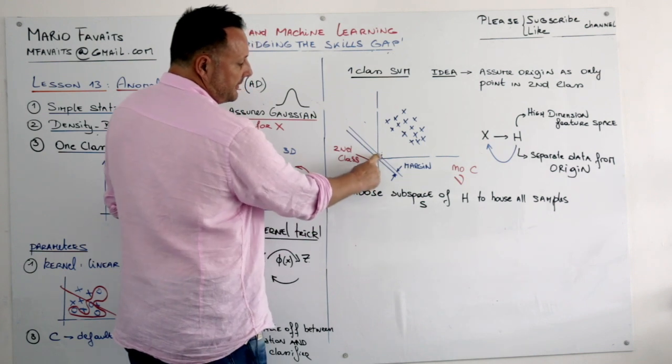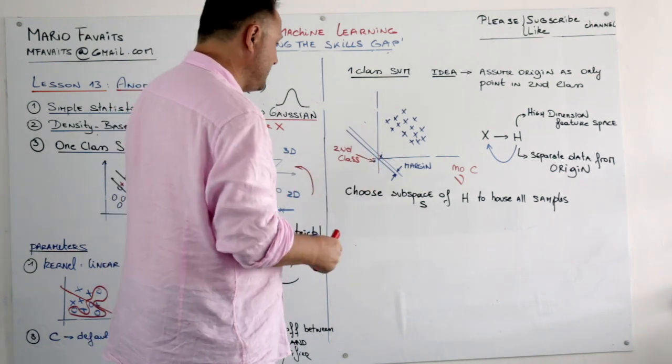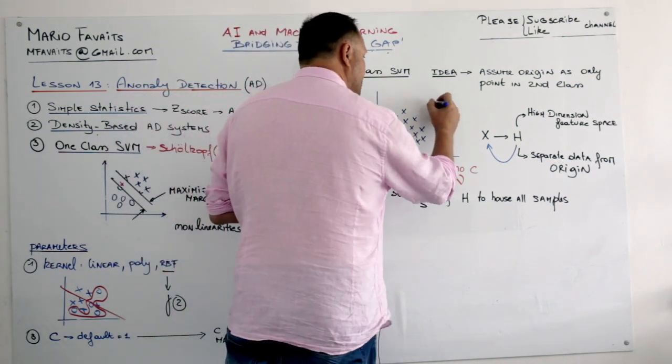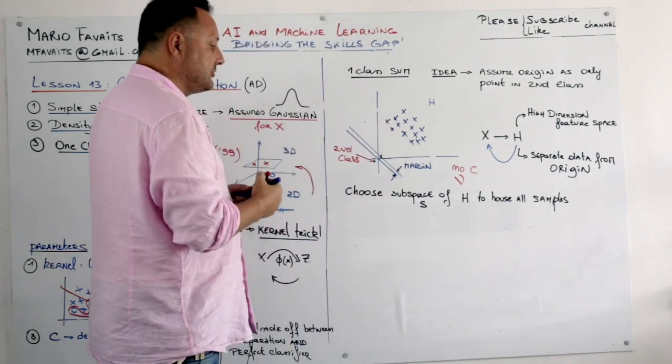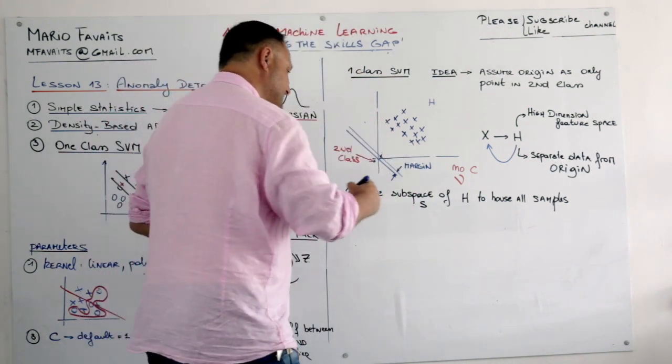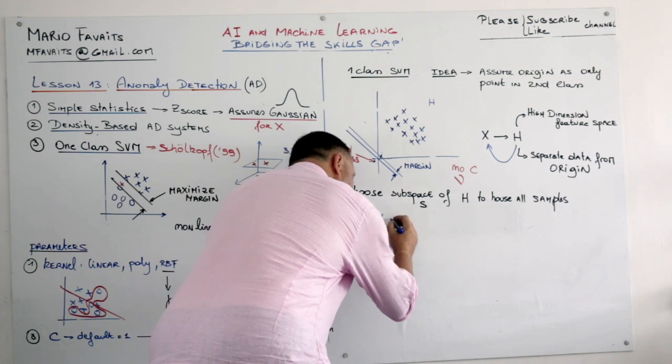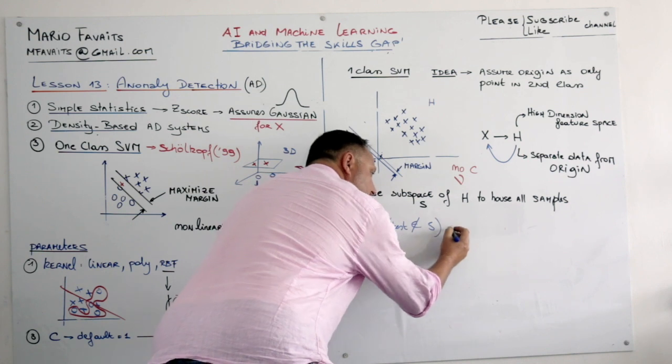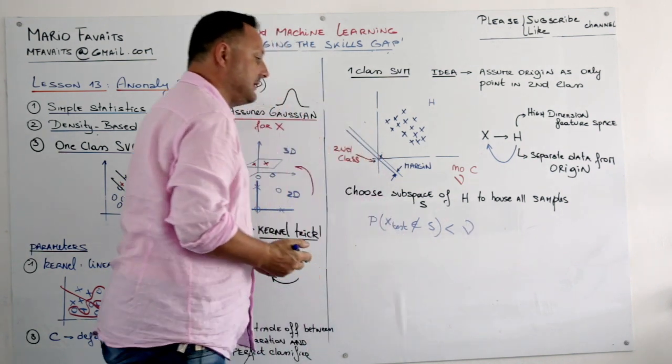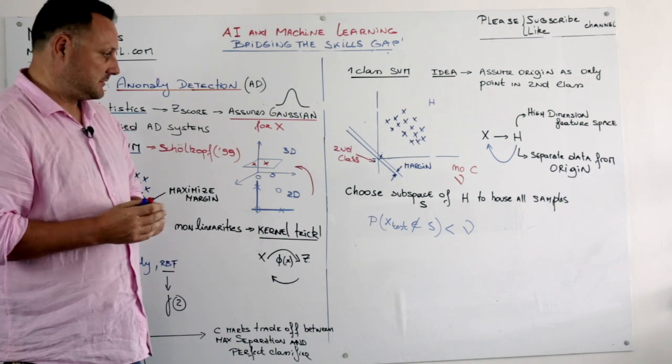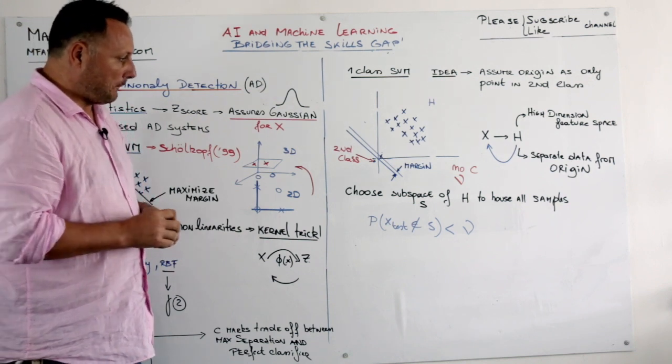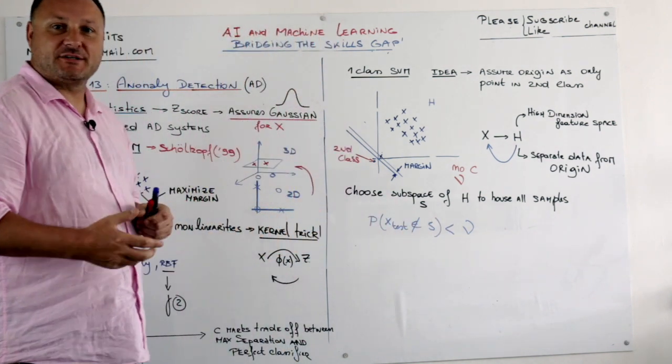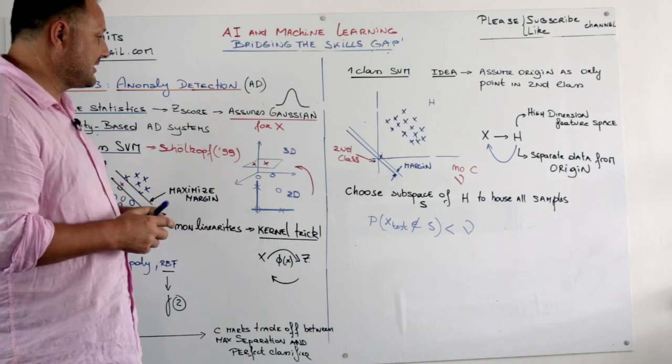And here I drew a point here. So basically what we do is we choose a subspace S of H. This is your space H. And we will choose a subspace of H. And the probability that the test point is not an element of S must be smaller than mu. Must be very small. So here again mu is kind of replacing the epsilon that we saw in the beginning of this session.